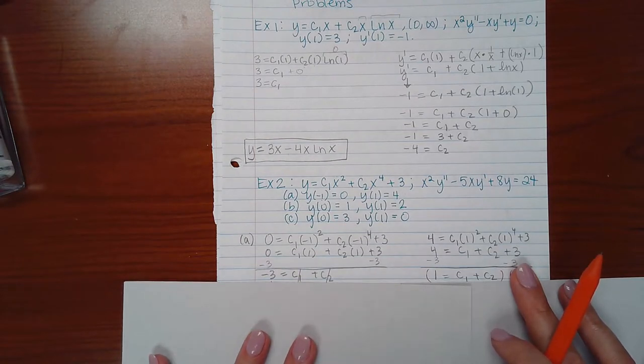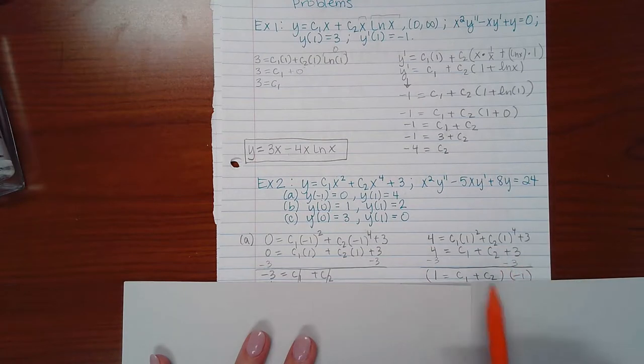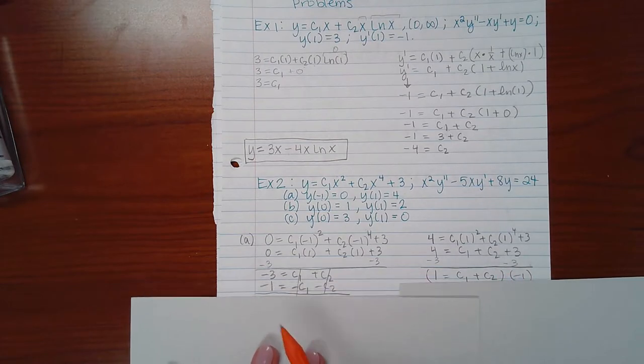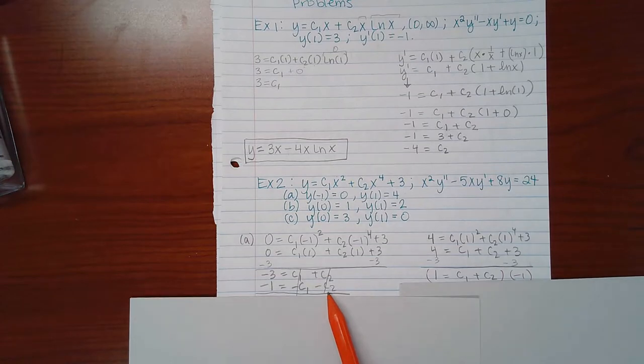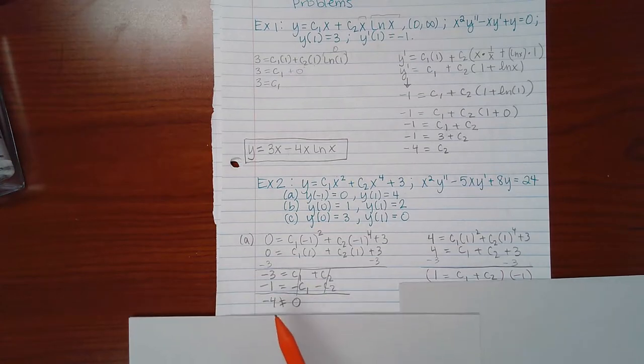Now, whether you attempt to solve it with substitution or you attempt to solve it using the elimination method, you will still get the same result. So here I multiplied every term by a negative 1 so that I could end up with a fraction that I might be able to cancel my C1s. But what I end up with is negative 1 equal to negative C1 and negative C2. So what ends up happening is I end up getting negative 4 and I end up getting nothing on the right-hand side, or 0.